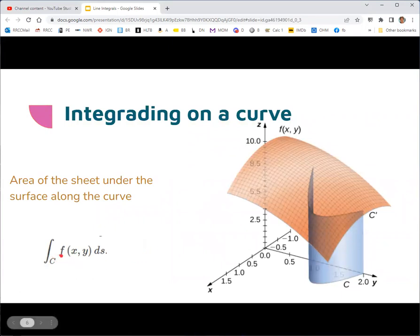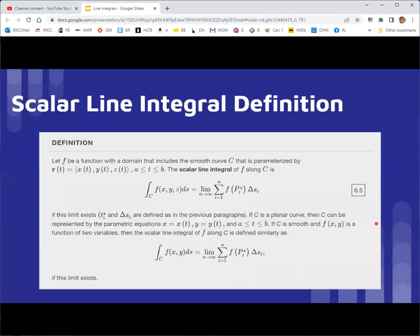Well, the integral of f along this line represents the area of this curved sheet in the same way that the integral of a function of a single variable represented the area under the curve, except now instead of it just being along the straight x-axis, it's along this curve c. So kind of like a calc one integral, but you've taken the x-axis and you've curved it around.